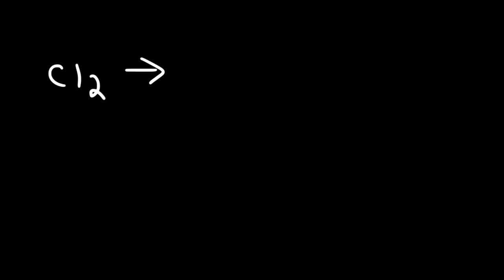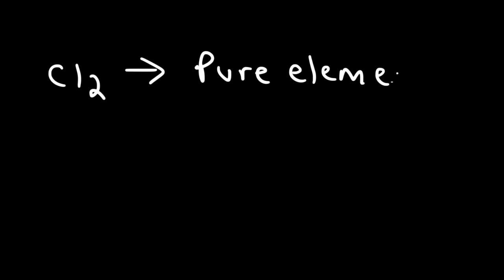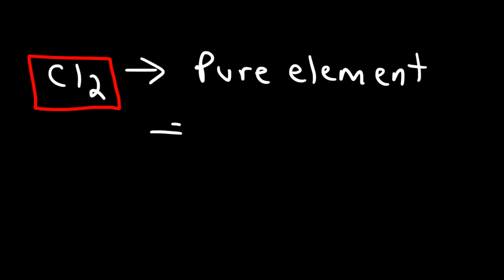Next example: if a substance is composed of only one type of atom, it's a pure element. It can still consist of molecules — a molecule can be made up of one type of atom or different atoms. If it's one type of atom, it's a pure element; if different types, it's a compound. As long as one particle consists of two or more atoms, whether same or different type, it's a molecule.